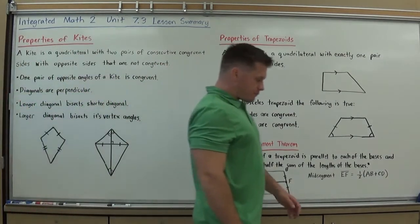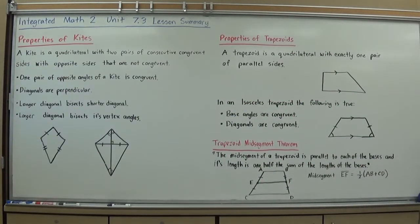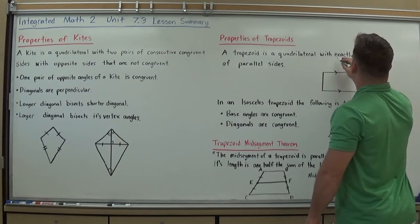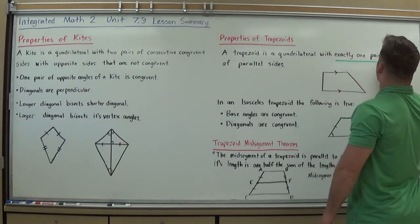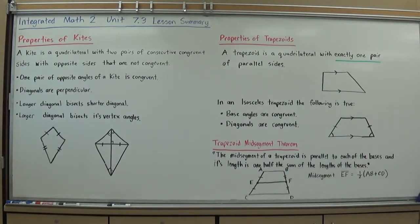Moving into trapezoids. Properties of a trapezoid. First of all, the definition: a trapezoid is a quadrilateral with exactly one pair of parallel sides. So we've dealt with a lot of shapes so far, a lot of quadrilaterals with two pairs of parallel sides. As soon as you have only one pair and exactly one pair, you are a trapezoid. So here's an example of a trapezoid.